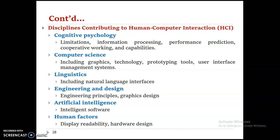There are disciplines in computing related to human-computer interaction. The first is cognitive psychology — any psychology that is really about humanity and the human mind. This includes limitation, information processing, performance, prediction, cooperative working, and capability. To make any machine intelligent, any developer must understand cognitive psychology, which is a key part of human-computer interaction.